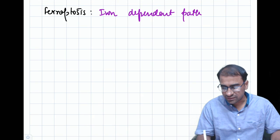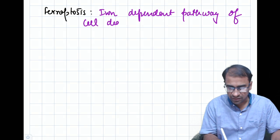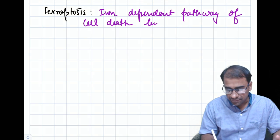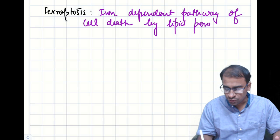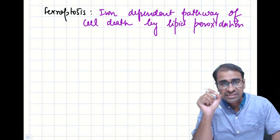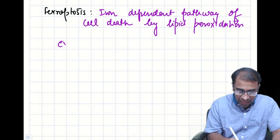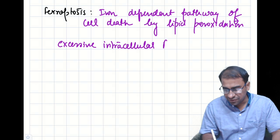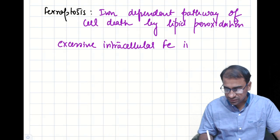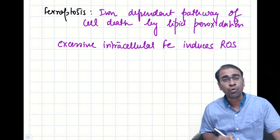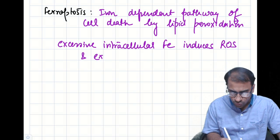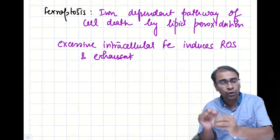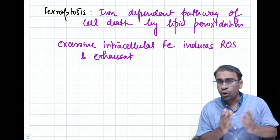The basic thing to understand is that ferroptosis is iron-induced cell death, but the mechanism is through lipid peroxidation. Excessive intracellular iron (Fe) induces a large number of reactive oxygen species (ROS), which exhaust the glutathione-based antioxidant mechanism — that is, GSH/GSSG.